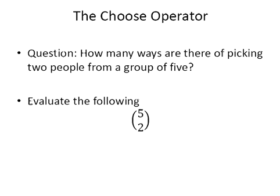Question: how many ways are there of picking two people from a group of five? We have five people to choose from, so n equals five, and we pick two people, so k equals two. We write this as five choose two.